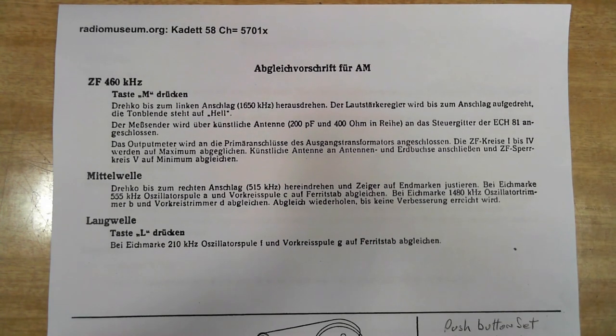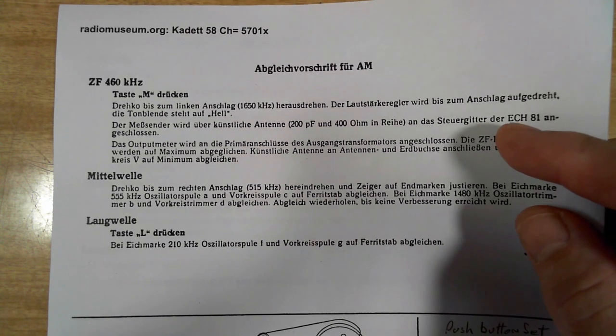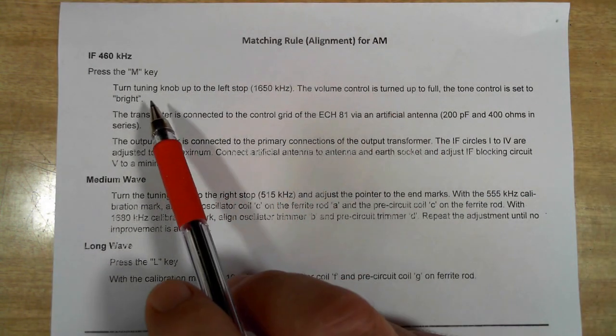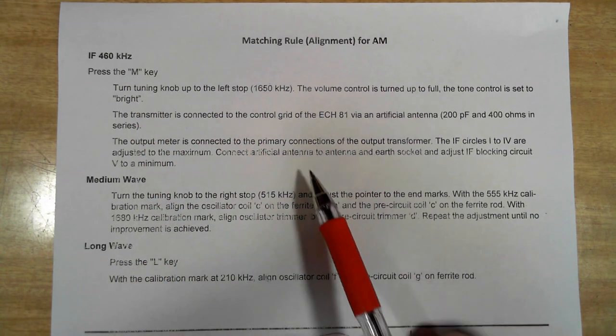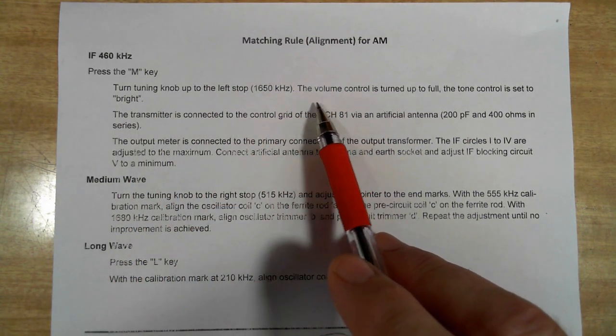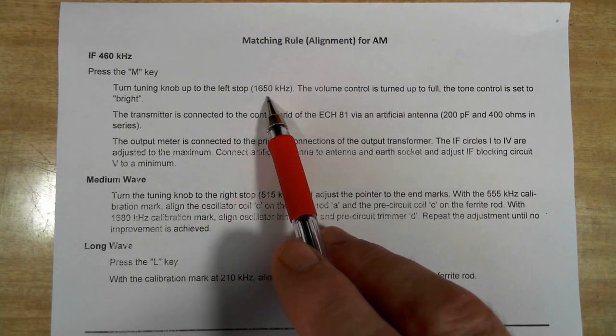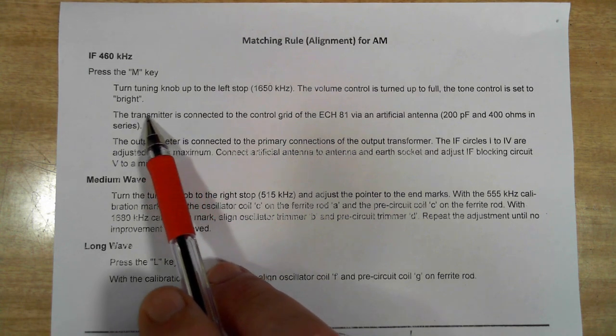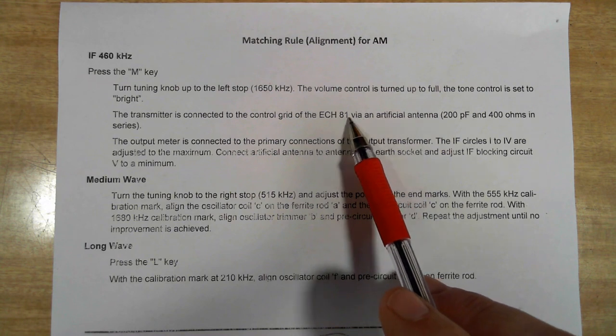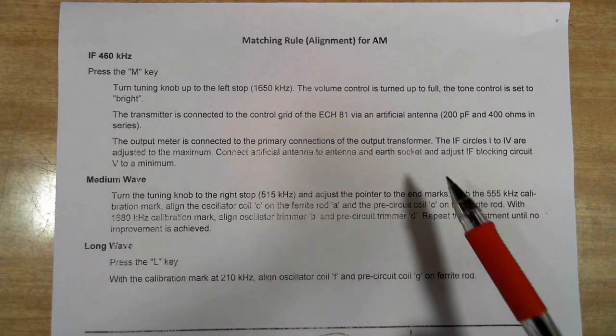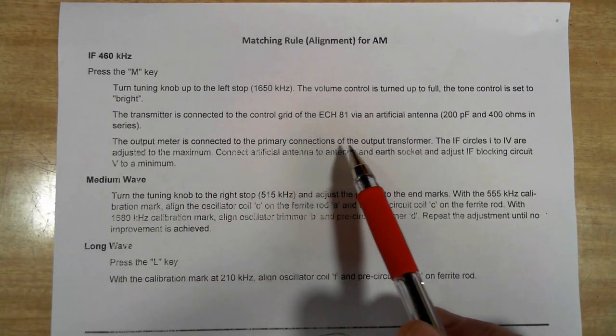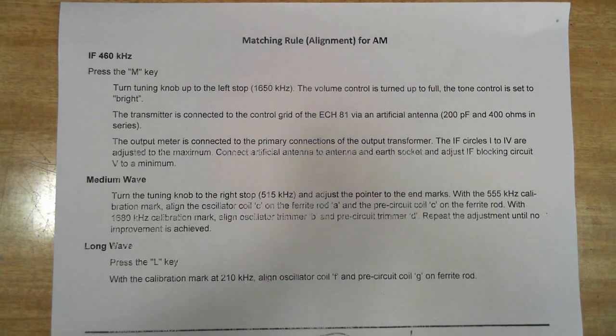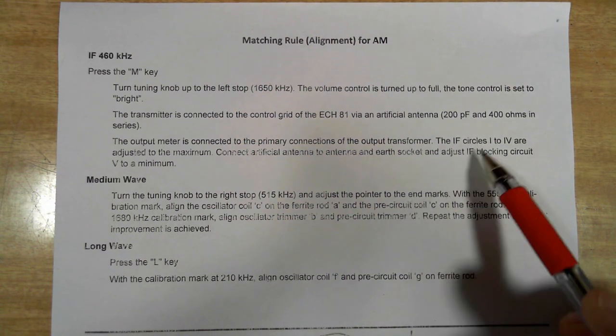I've got the instructions here for doing the AM alignment. Unfortunately, it's in German and I don't speak or understand German. But I typed all these letter by letter into Google Translate and came up with the English translation. So I've recreated the sheet with it on it in English. It says the volume controls on full go to the 1650 kilohertz end of the scale. And the tone control on bright. Now my generator, that's a transmitter. The generator is connected to the grid of the ECH81. And we'll have a look at that in a second. And we put it through the 200 and 800 ohm series artificial antenna, dummy antenna. Now I'm going to connect an AC voltmeter to the output transformer, which is the plate of the output valve. And I'll do that through a 0.01 capacitor.